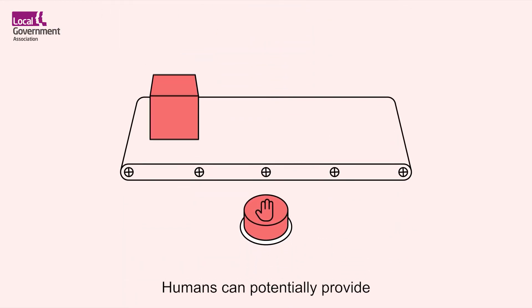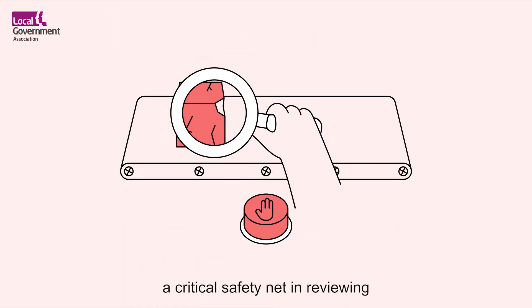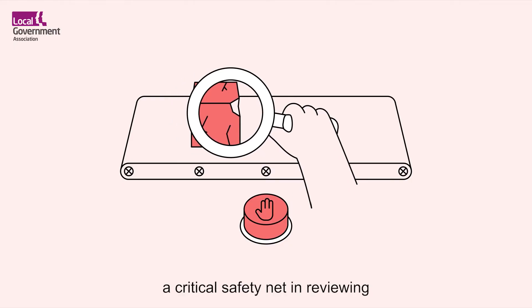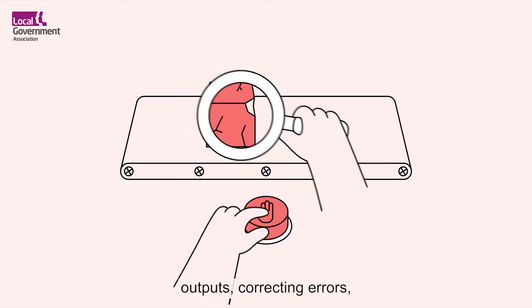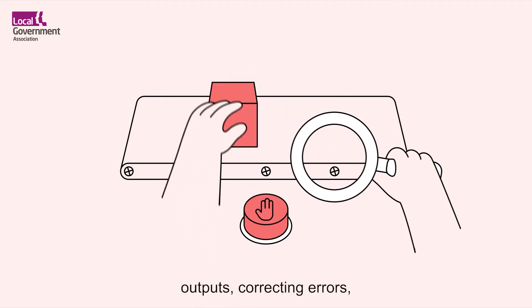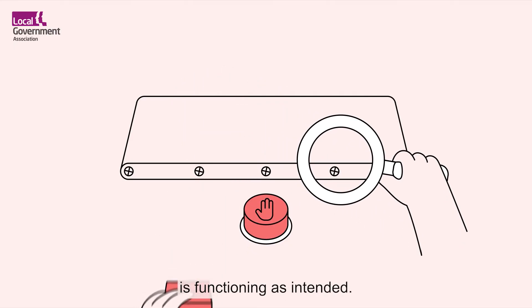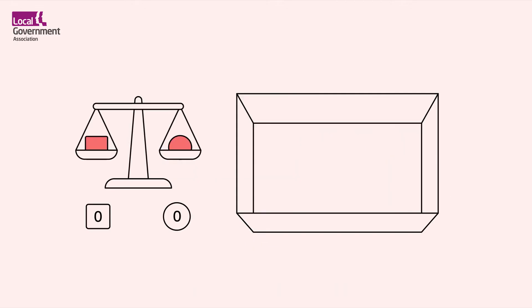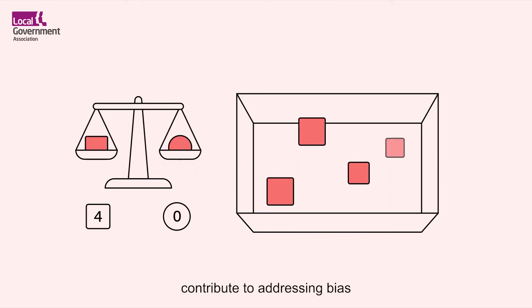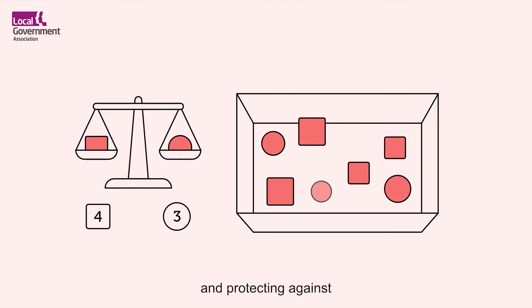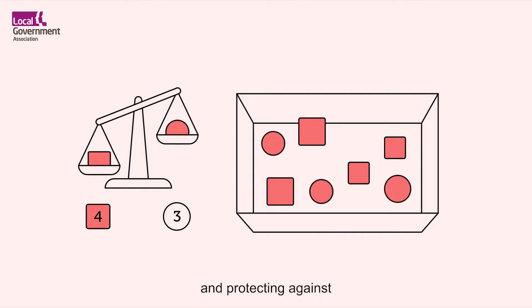Humans can potentially provide a critical safety net in reviewing outputs, correcting errors and ensuring an AI system is functioning as intended. A human in the loop can also contribute to addressing bias and fairness and protecting against unintentional harm.